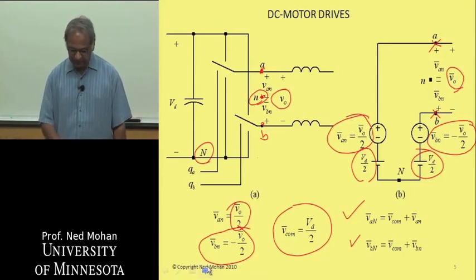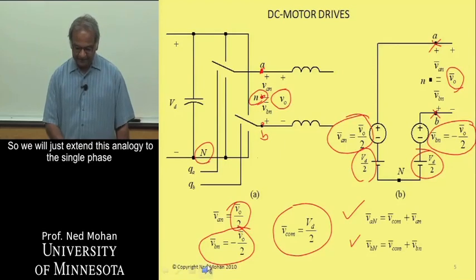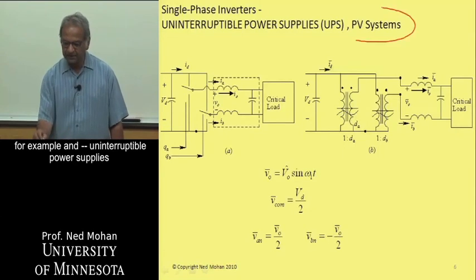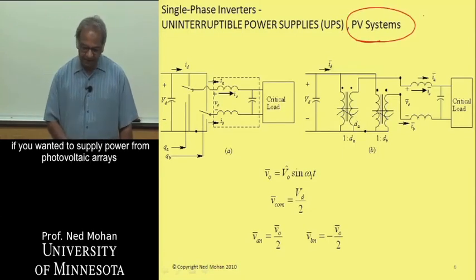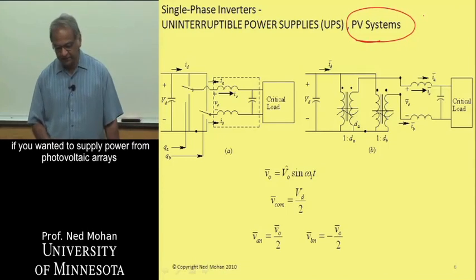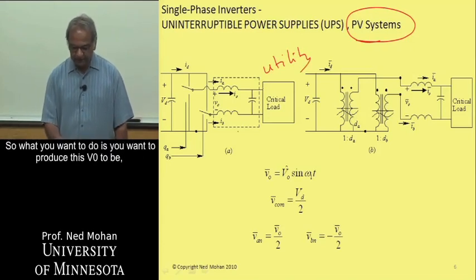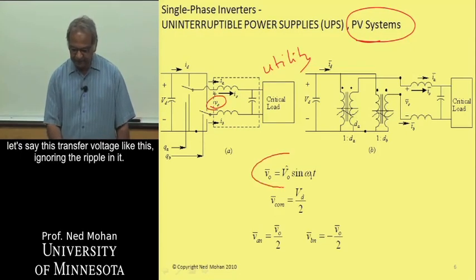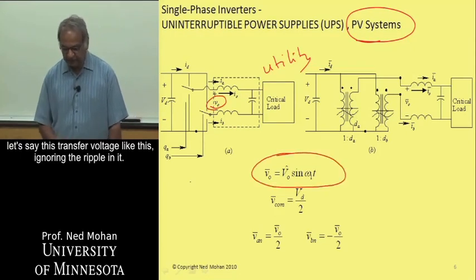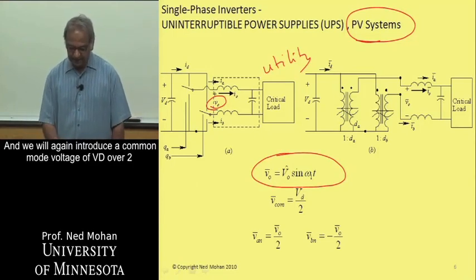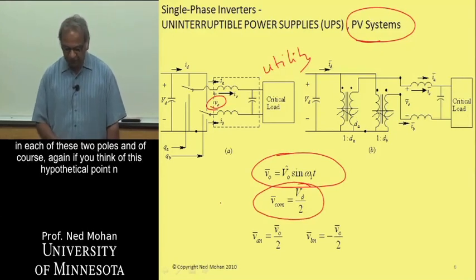So we will just extend this analogy to a single phase. For example, in uninterruptible power supplies, or if you wanted to supply power from photovoltaic arrays to the utility, where this could be the utility rather than a critical load. So what we want to do is we want to produce this V0 to be a sinusoidal voltage like this, ignoring the ripple in it.